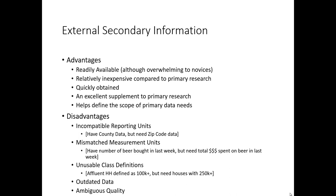Oftentimes, secondary information also has a mismatched variable problem. For example, you might find information about the number of beers people typically buy in a week, but what you really need is the amount of money they're spending on beer. If you're a craft beer manufacturer looking to offer more expensive, higher-quality six-packs, knowing purchase quantity alone may not be enough. If all you have is the number of beers bought, you're left making assumptions about how those two numbers correspond.